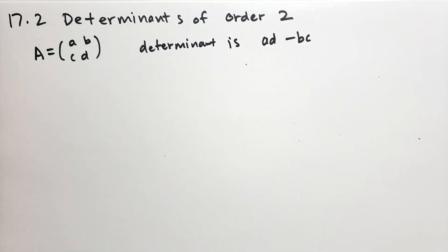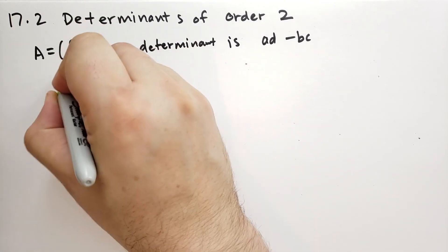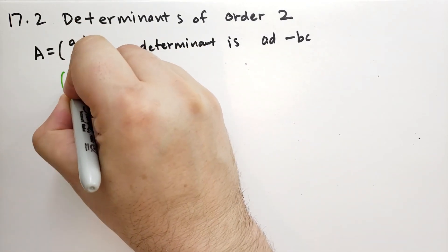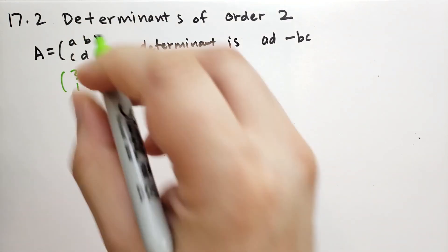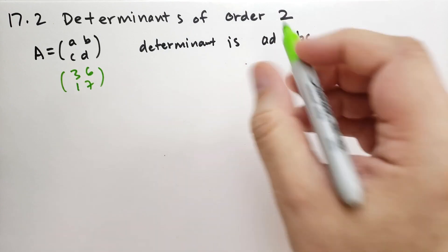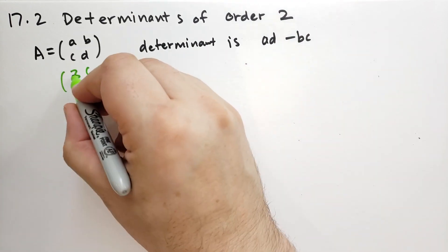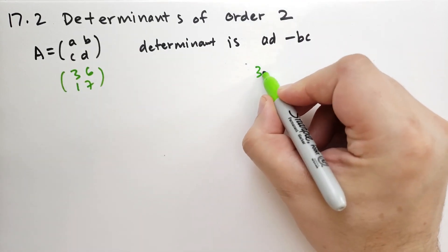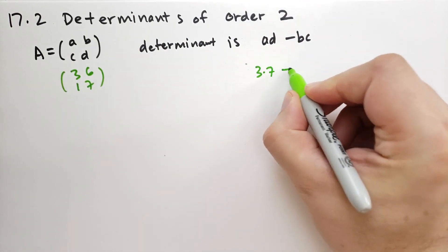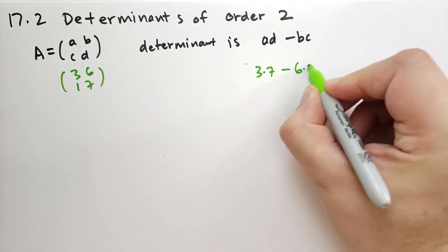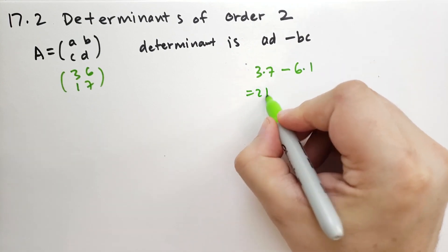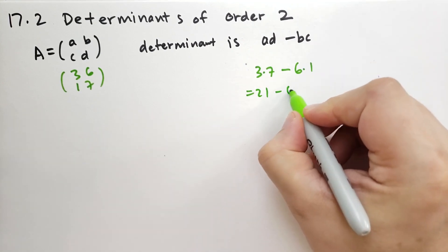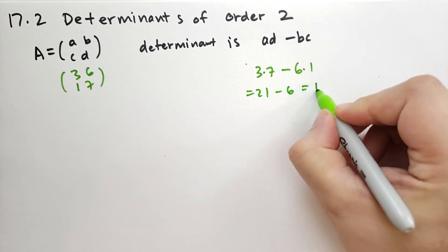As an example, suppose we had the matrix [3, 6; 1, 7]. So the determinant would be A times D, so that's 3 times 7, minus 6 times 1. So that's 21 minus 6, which is just 15.